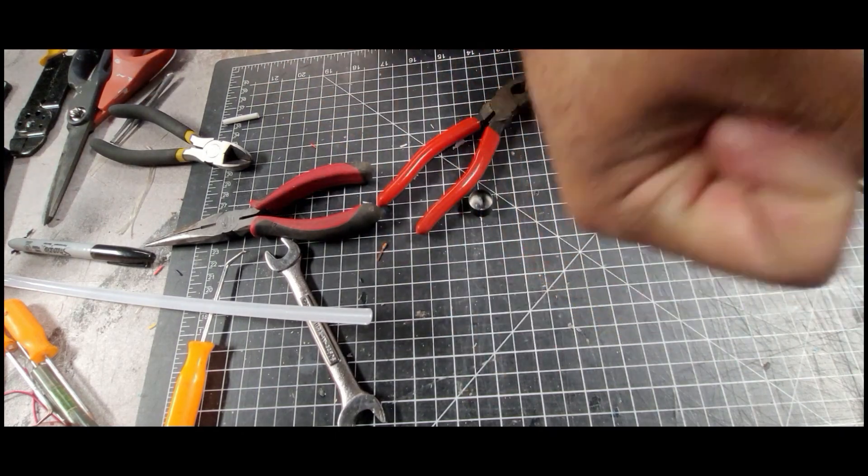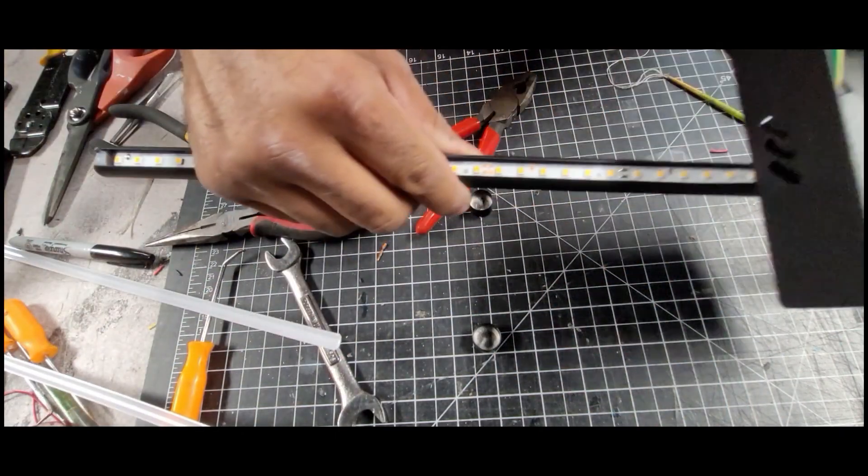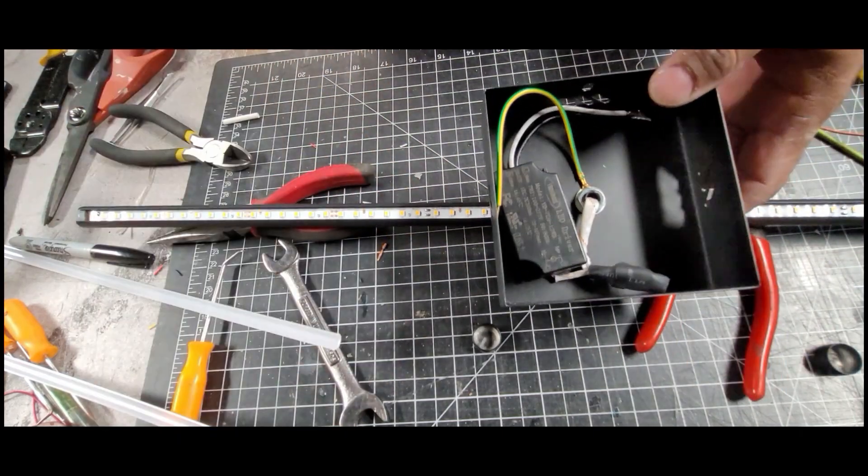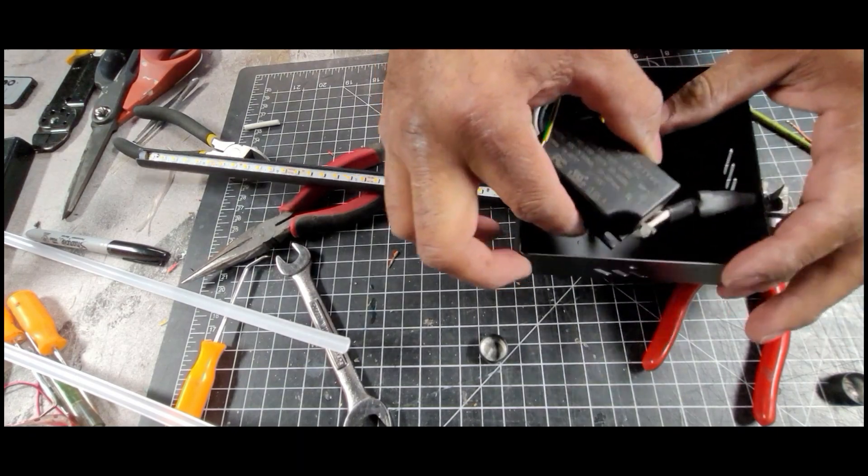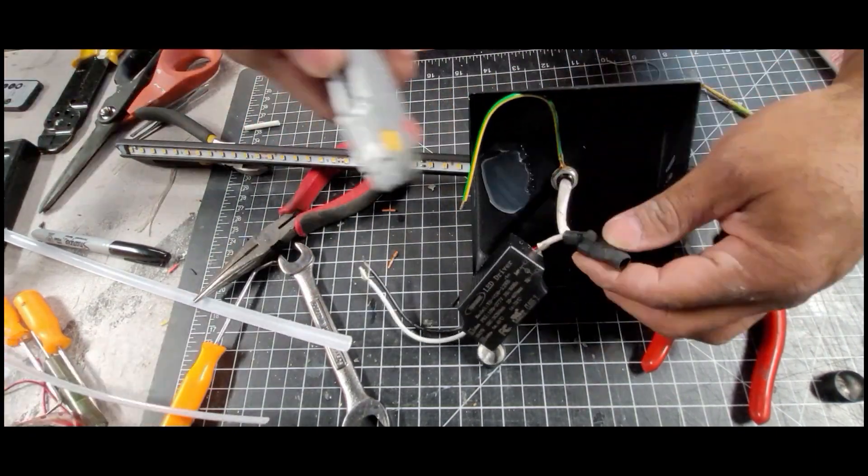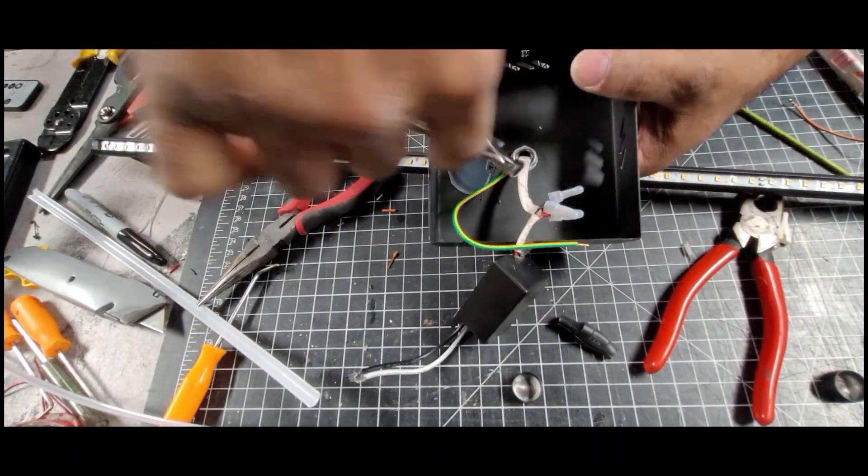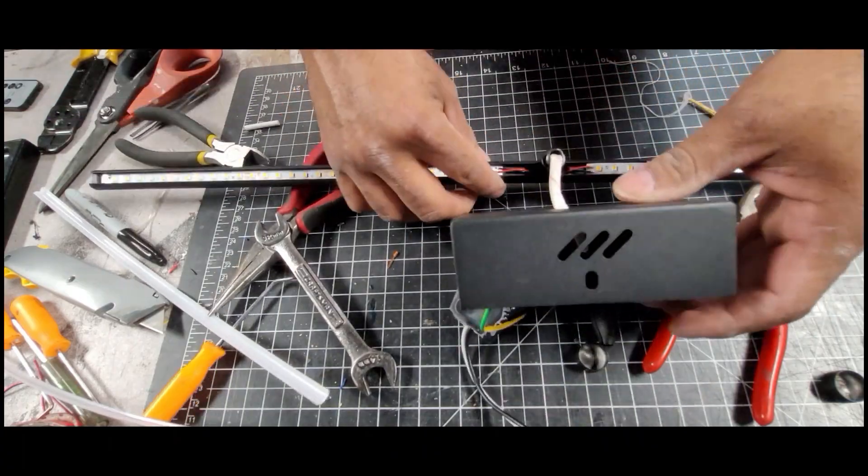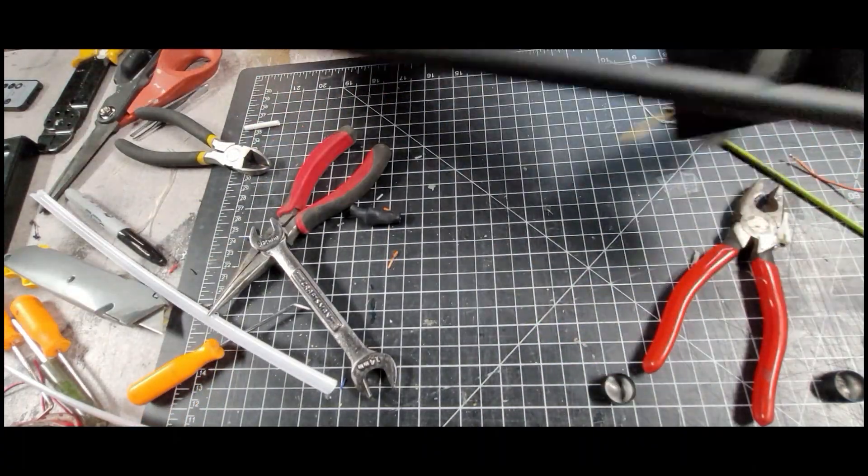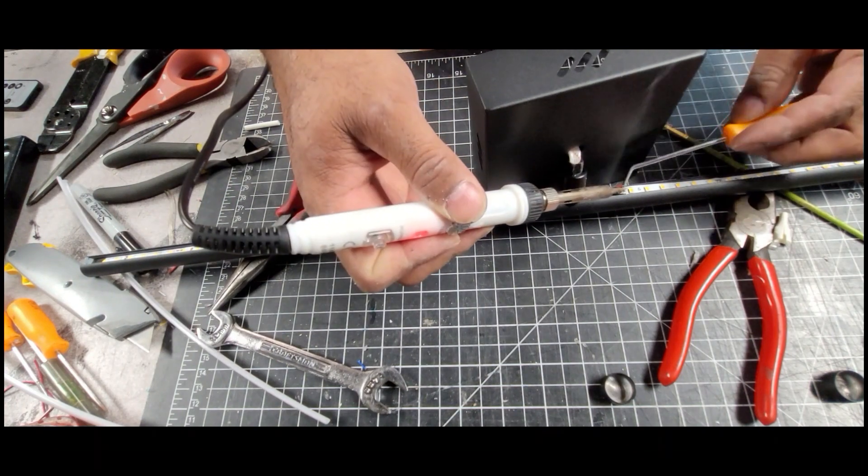I detached the driver and removed this other heat shrink. I then removed the nuts that hold the fixtures together. Doing this gives me some slack in the wires and gives me better access to the wires on the LED strips. I detached the wires on the LED strip.